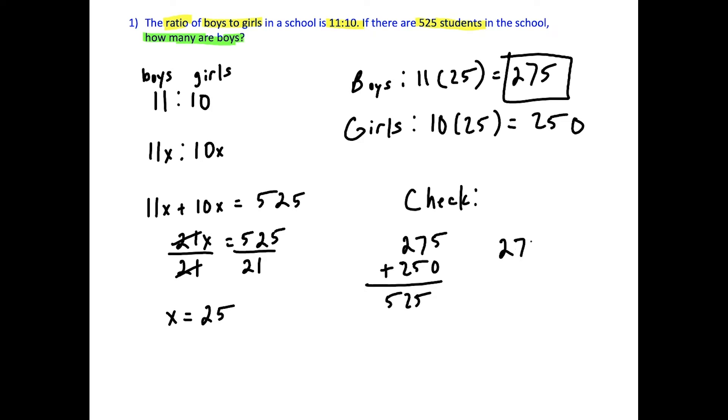And another thing to check here is to compare these two numbers by division, divide the top and bottom by 25, and this does simplify to 11 over 10. So both of these things here check out. 275 is our solution to the first one.